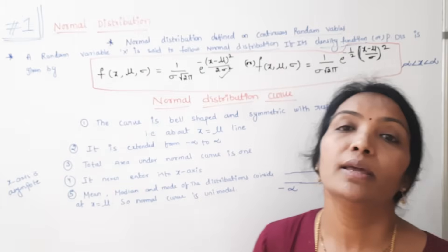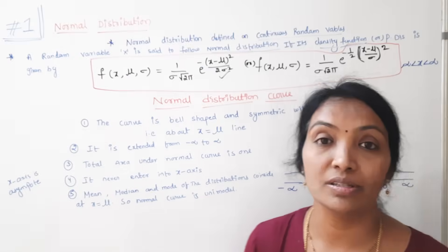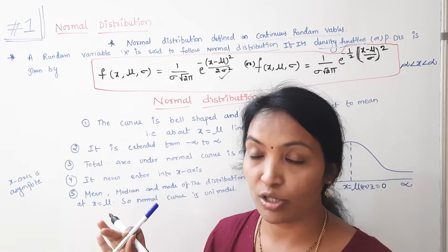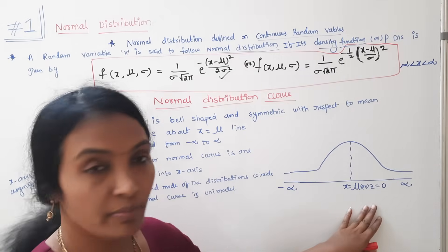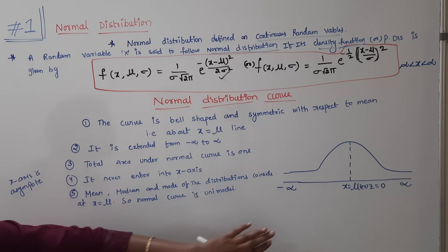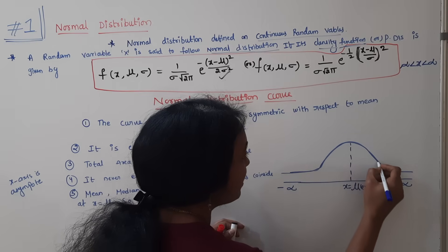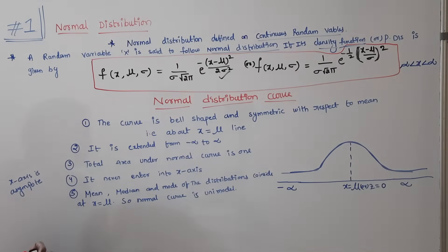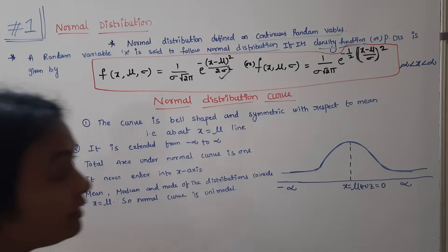A very important topic is the mean, median, and mode of the normal distribution — they are all the same. This is a normal distribution curve, also known as the bell curve.